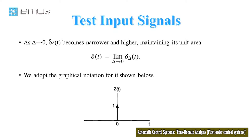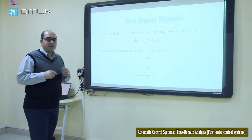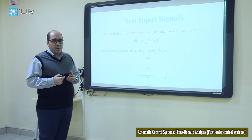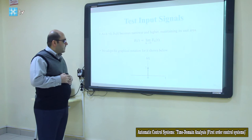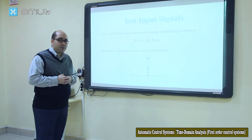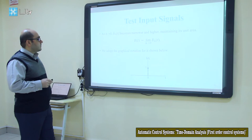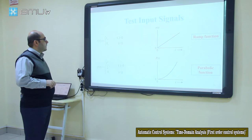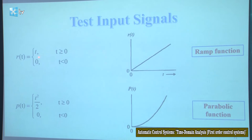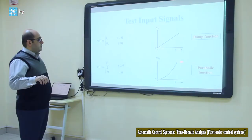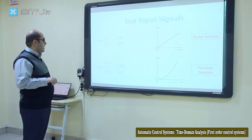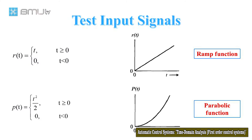This is the second input test signal which will be applied to our system. The third one is the ramp function. R(t) is equal to t for t greater than 0, and 0 for t less than 0, as shown in the figure. Another one is the parabolic function, which equals t squared divided by 2 for t greater than 0, and 0 for t less than 0.